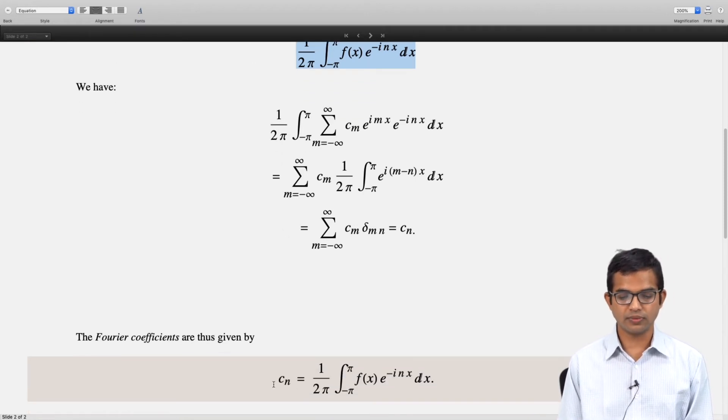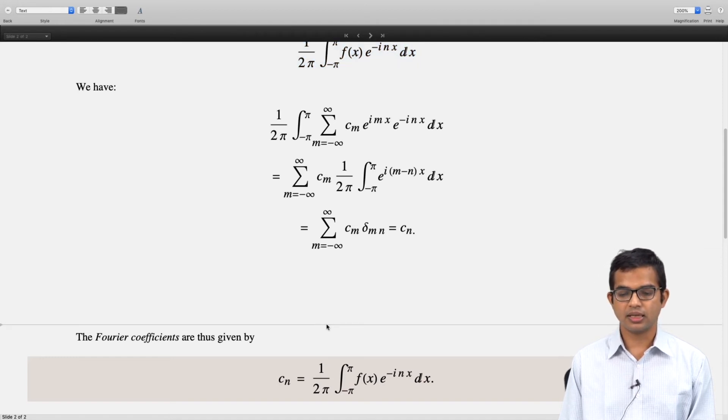This is a prescription for identifying any of the Fourier coefficients. This is our rule: if you are given a function f(x) which is periodic with period 2π and you want to express this as a Fourier series involving these complex exponentials, then the coefficients are given by this simple expression.